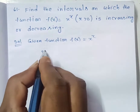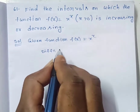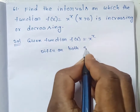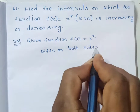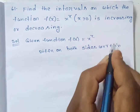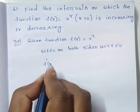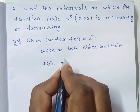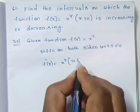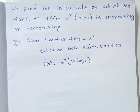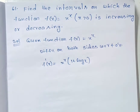Given function: f(x) = x^x. Differentiating on both sides with respect to x. So, f'(x) is equal to the derivative of x^x, which is x^x into (1 + log x). Therefore, f'(x) = x^x (1 + log x).